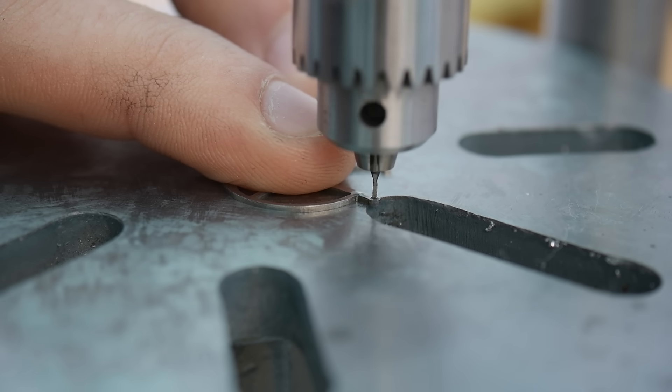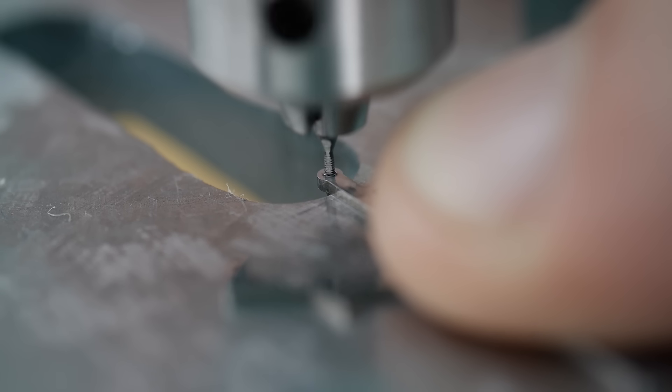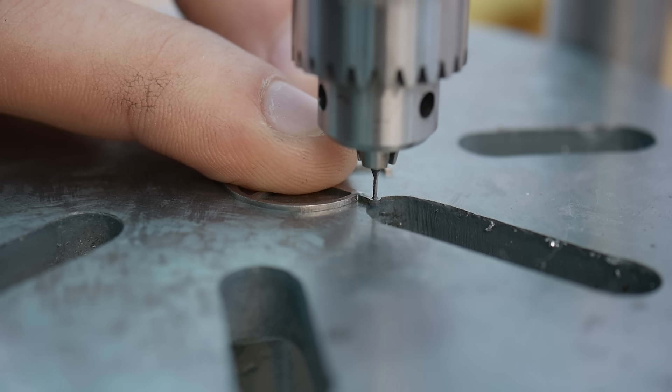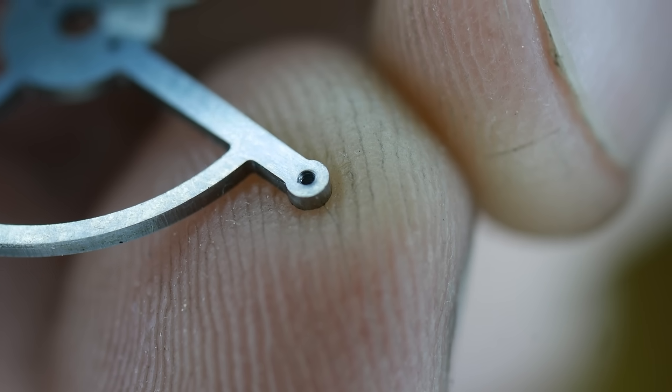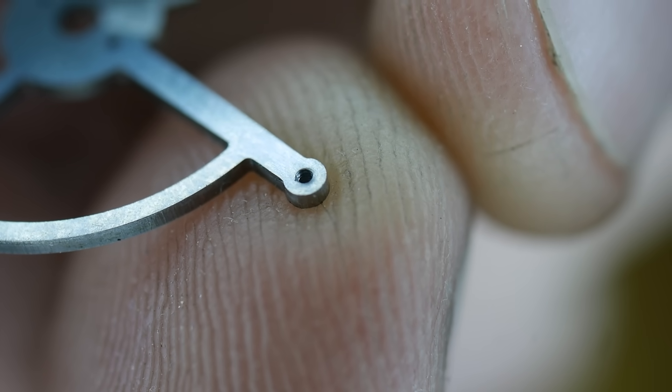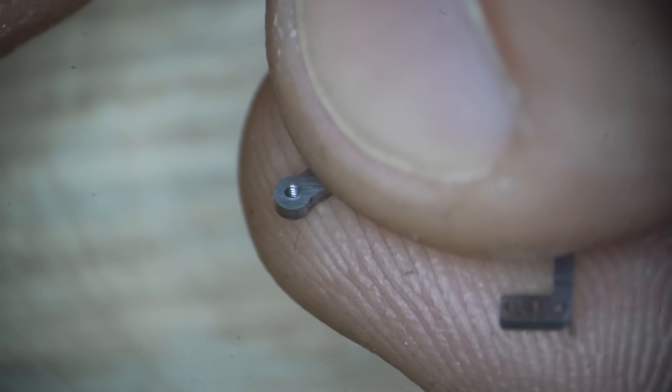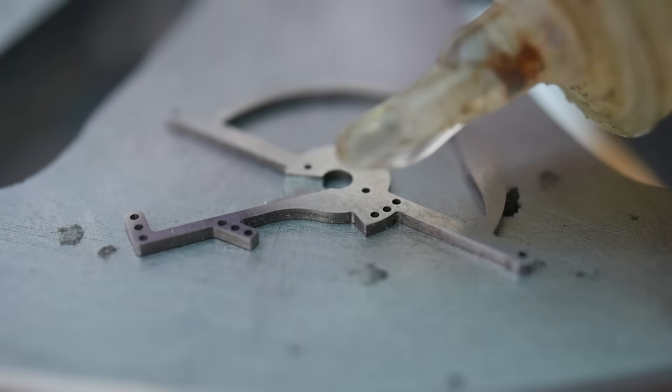I tap the holes corresponding to the screw locations. These are all 0.6mm threads, which are amongst the smallest typically used in a watch movement. When tapping small threads like this in tough steel, it's important to take extreme care. I back off the tap regularly and use lots of cutting lubricant. A broken tap will almost certainly write off the part.